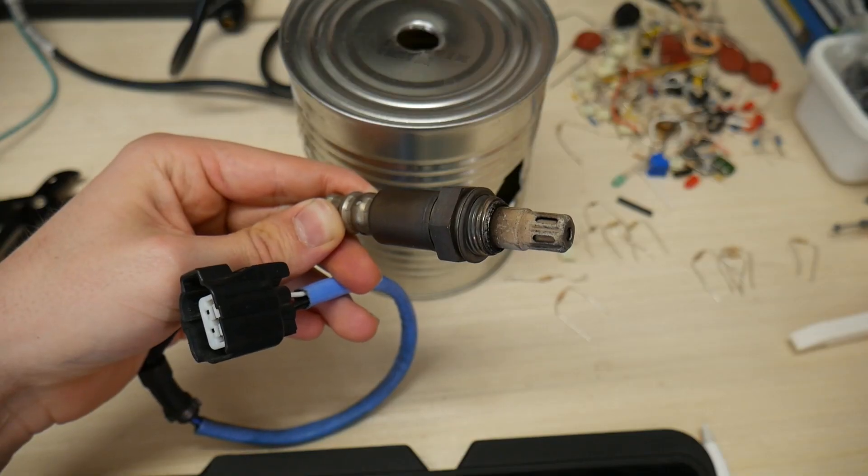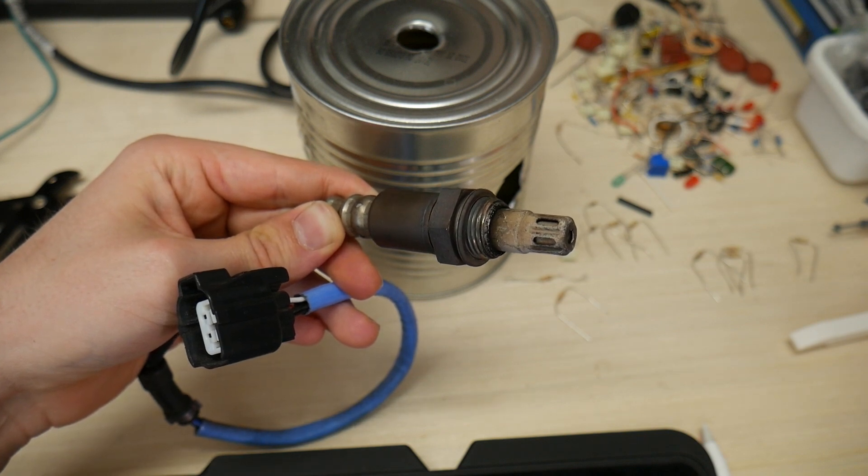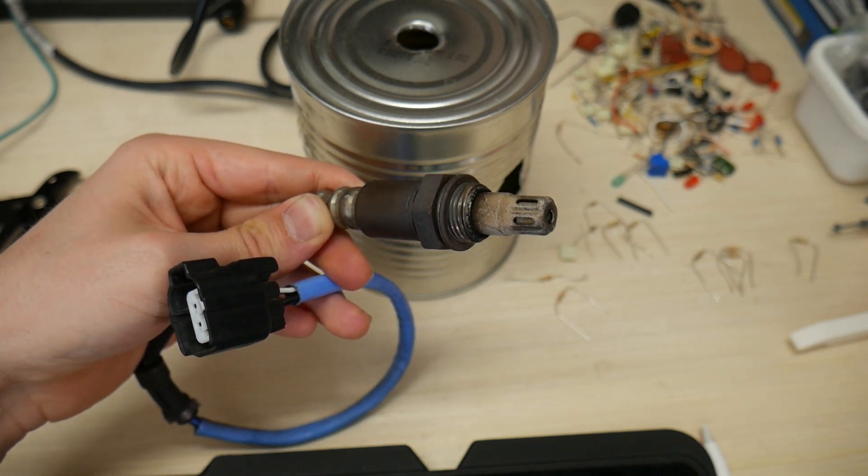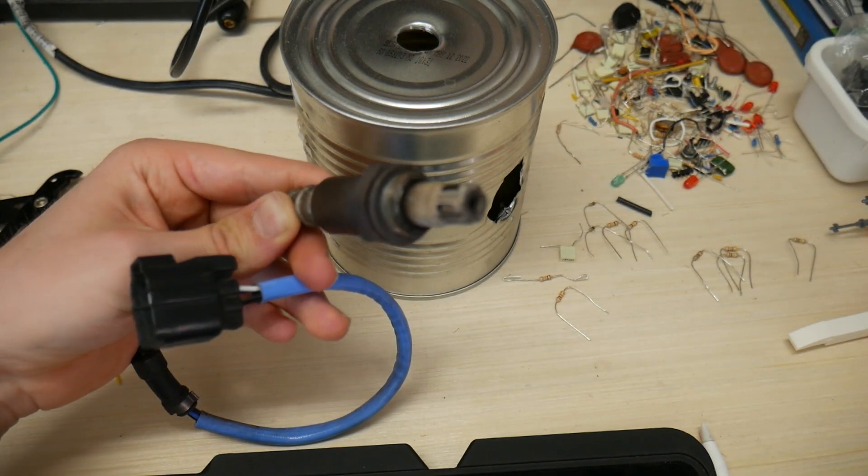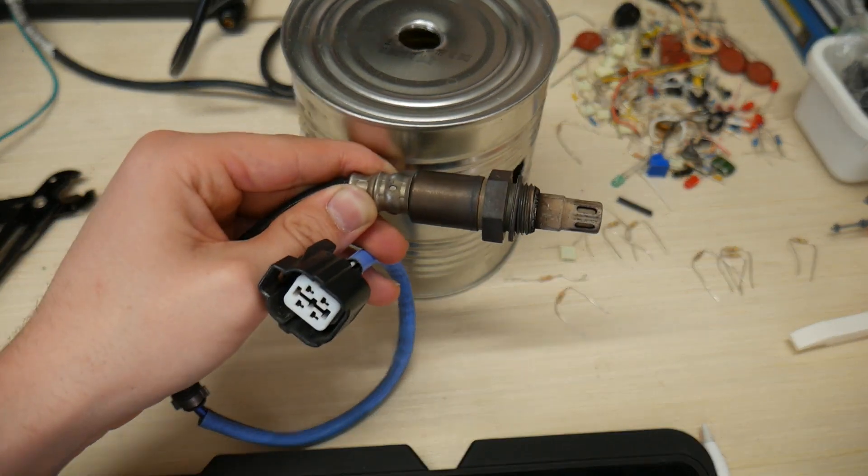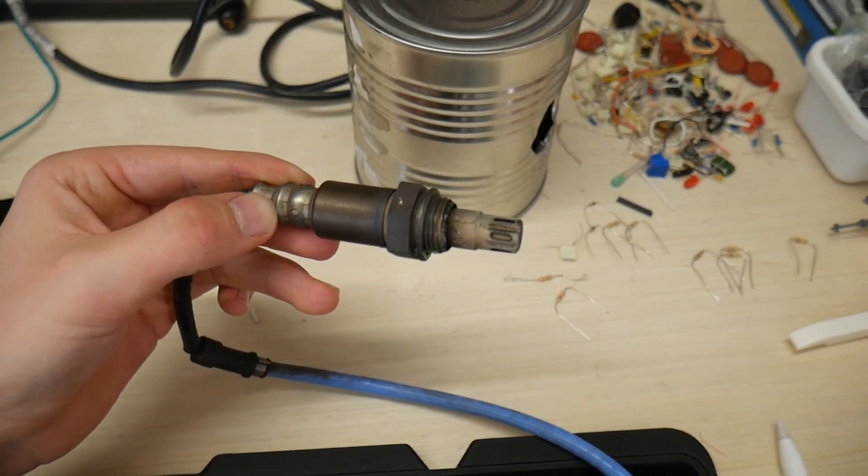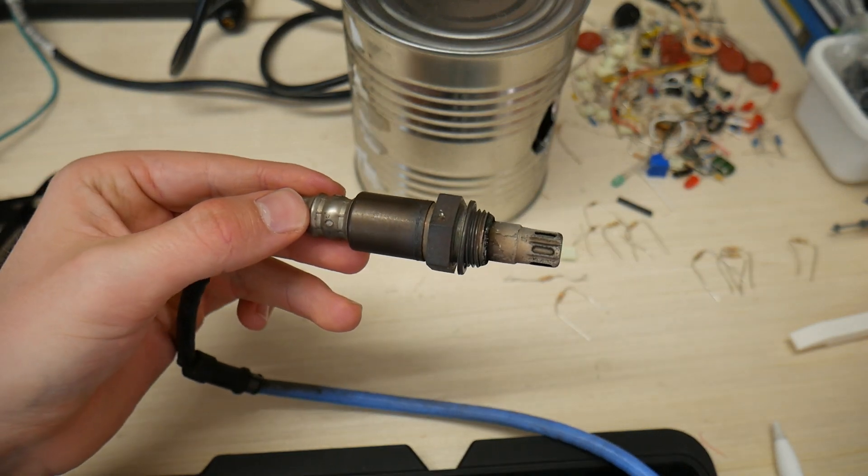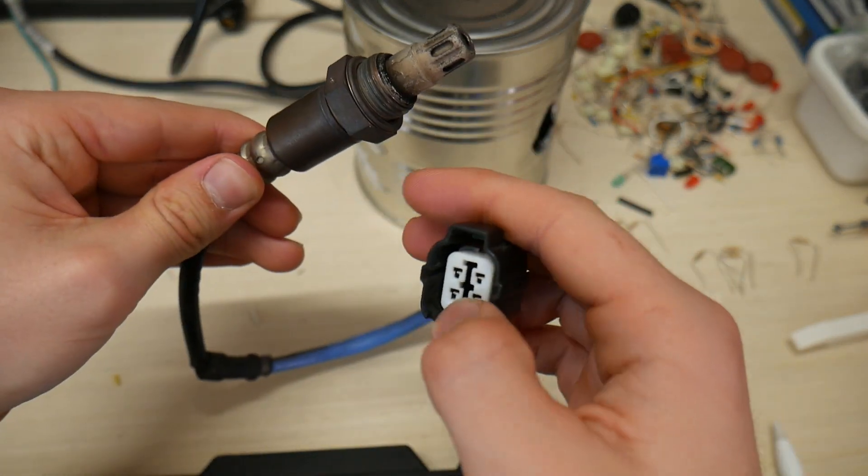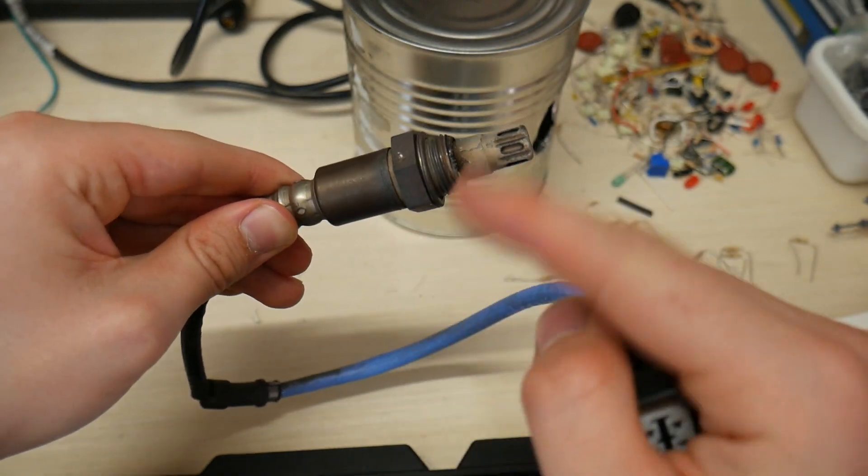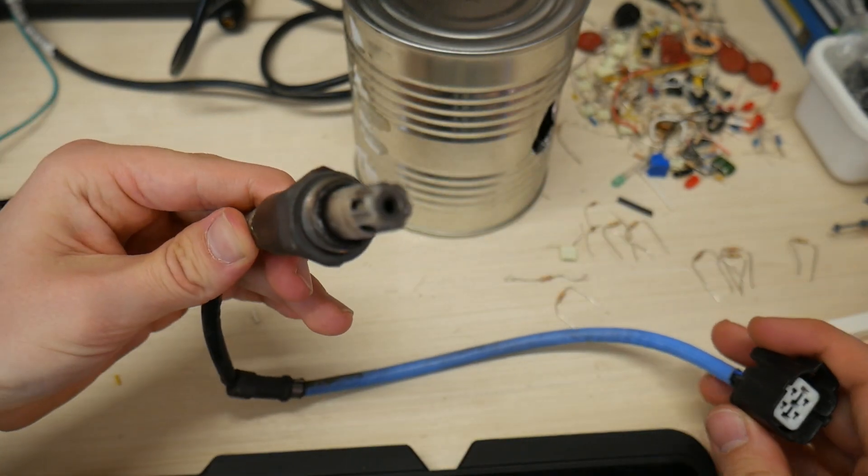Oxygen sensors, no matter what type they are, narrowband or wideband, need to be heated. A wideband oxygen sensor needs to be heated to around 600 degrees Celsius, and a narrowband oxygen sensor needs to be heated to around 400 degrees Celsius, which takes a lot of current. So there's a little heater inside here that connects to two of the wires that heats the little element in there to red hot.